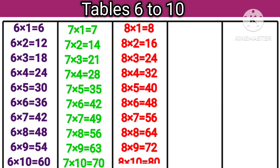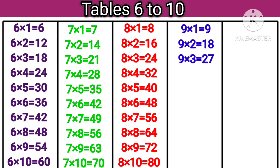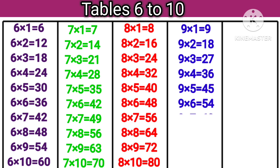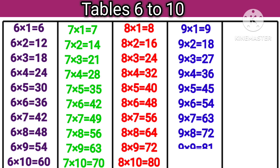8 nines are 72, 8 tens are 80. 9 ones are 9, 9 twos are 18, 9 threes are 27, 9 fours are 36, 9 fives are 45, 9 sixes are 54, 9 sevens are 63, 9 eights are 72, 9 nines are 81, 9 tens are 90.